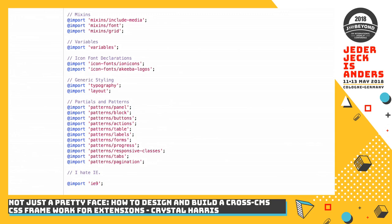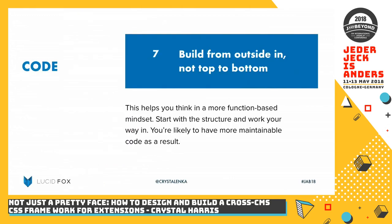In addition to organizing your code based on purpose, when you sit down and start coding you should start from the outside in — start from the structure. This is working the opposite to the design system approach. When I start from the outside and work my way in when I'm coding — not designing — I tend to write more semantic code because the bigger elements are reusable. It helps you think in a more function-based mindset if you go outside in instead of top to bottom.